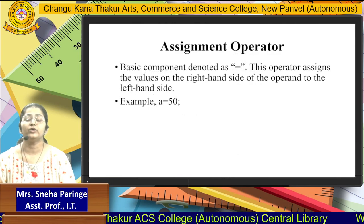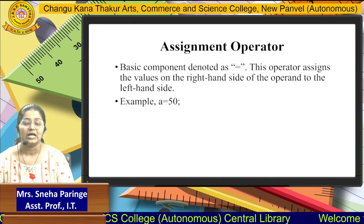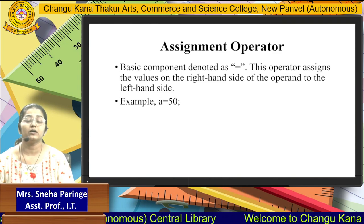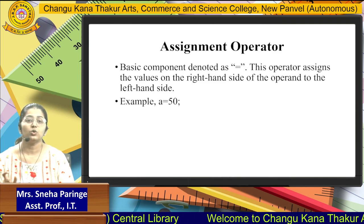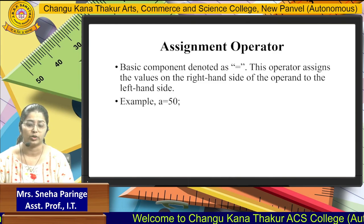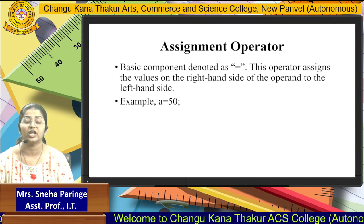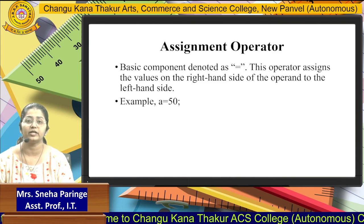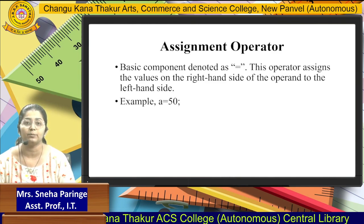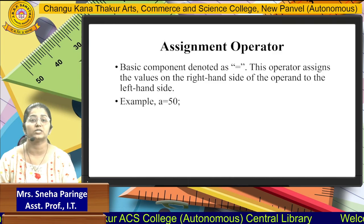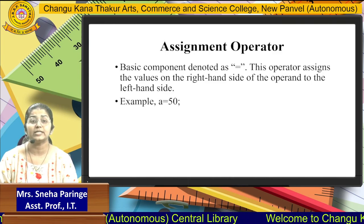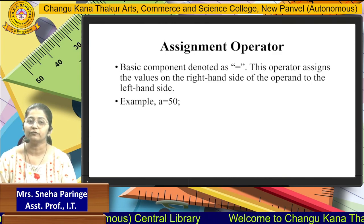Next, we are going to see the Assignment Operator. The Assignment Operator is denoted by the symbol equal to. Only one basic component is available in the Assignment Operator, that is equal to, which helps to assign the value from the right-hand side of the operand to the left-hand side. Here you can see the example: the value 50 is assigned to the left-hand side operand A. So now A's value will become 50.